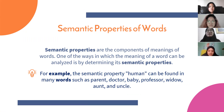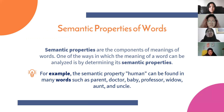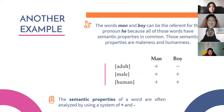The next topic is semantic properties of words. Semantic properties are the components of meaning of words. One of the ways in which the meaning of a word can be analyzed is by determining its semantic properties. These properties are the elements of meaning that make up the mental image of the word in the mind of the speaker. For example, the semantic property 'human' can be found in many words such as parent, doctor, baby, professor, widow, aunt, and uncle. The words man and boy can be the referent for the pronoun 'he' because all of these words share semantic properties — maleness and humanness.